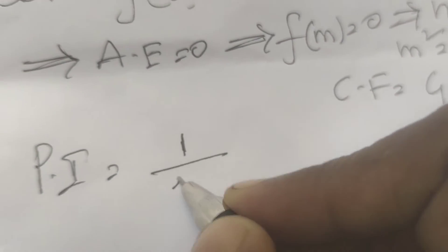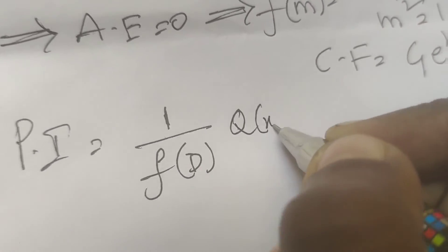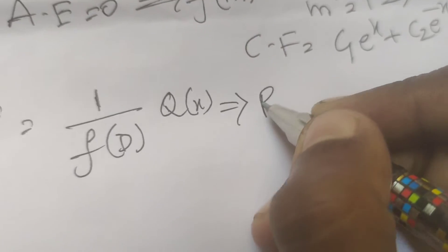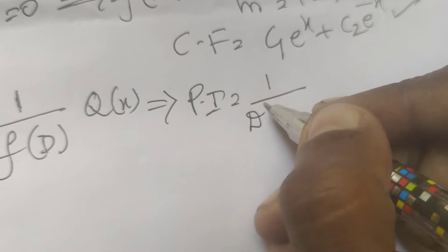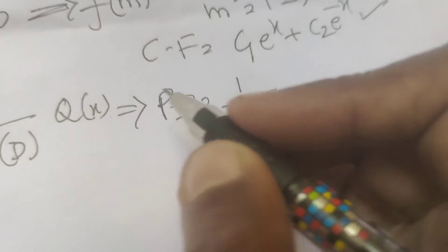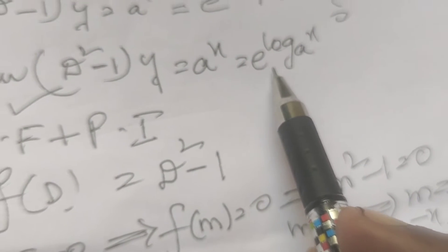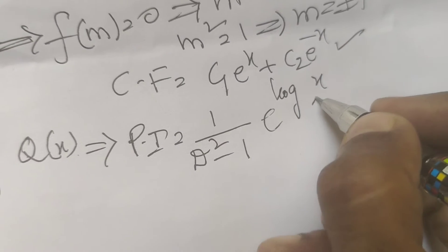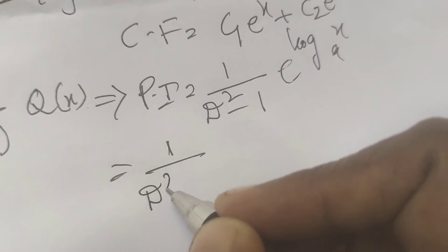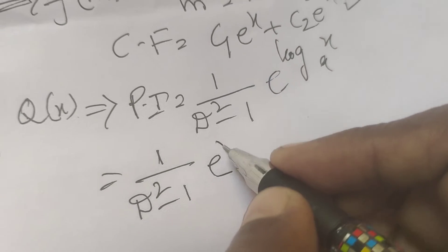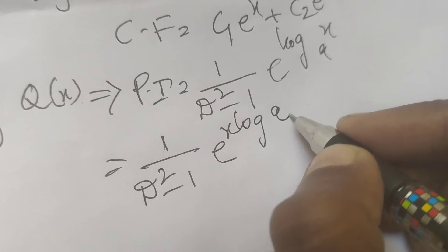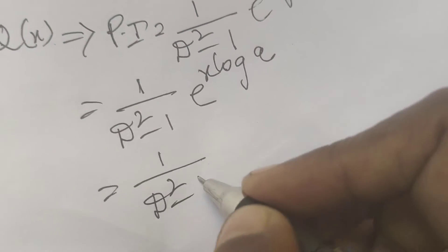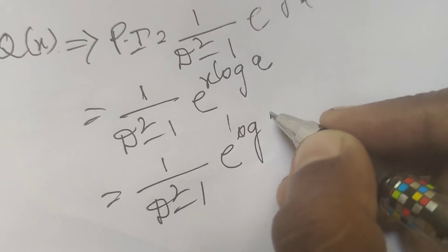Now find the particular integral PI. PI = 1/f(D) · Q(x). Here Q(x) from the given problem is e^(x·log a). So PI = 1/(D² - 1) · e^(x·log a).